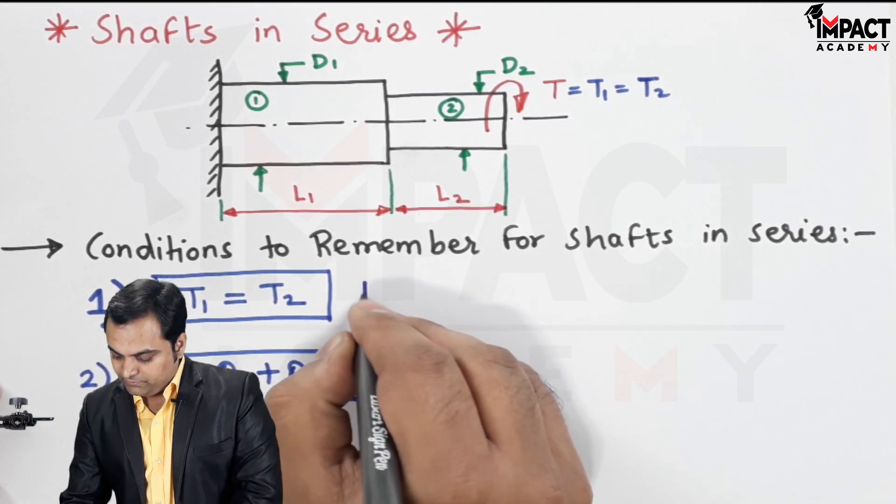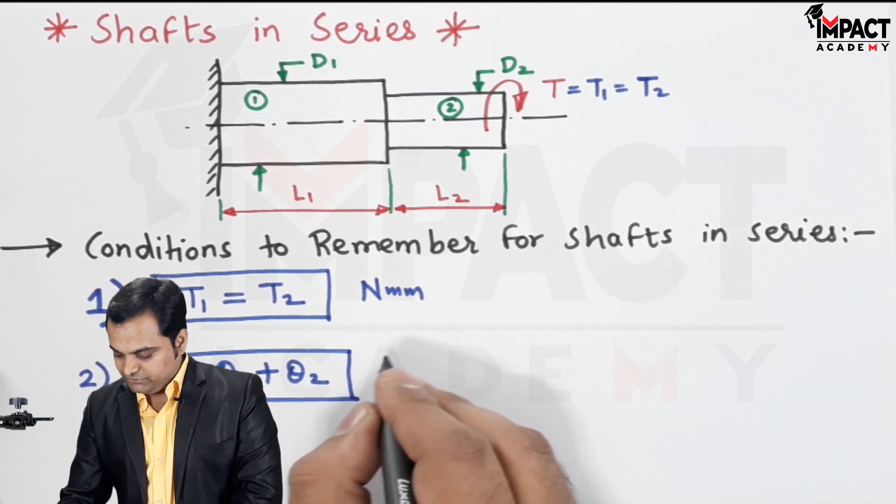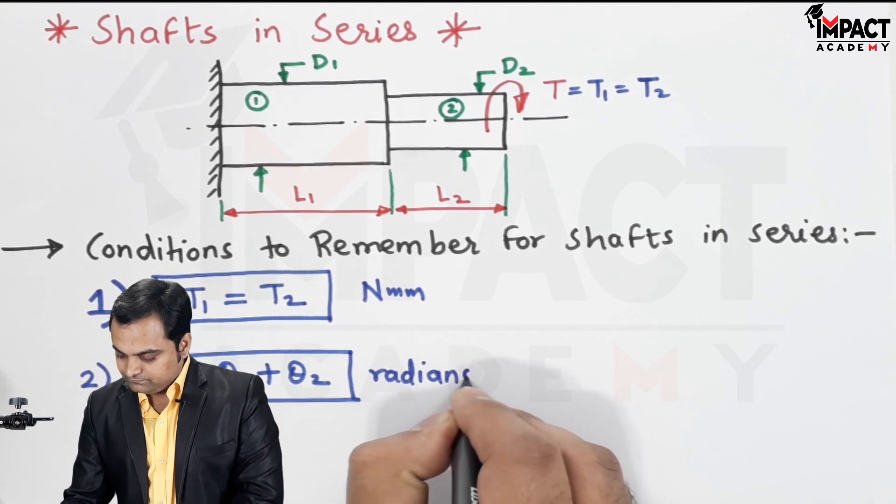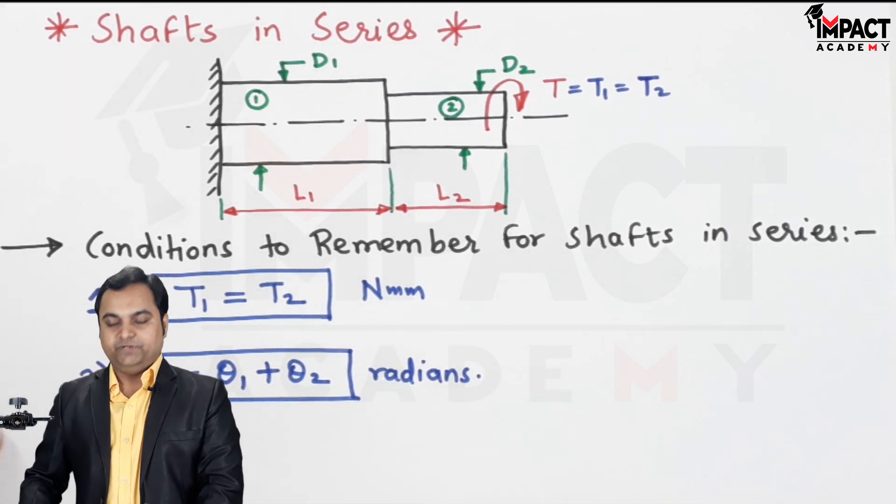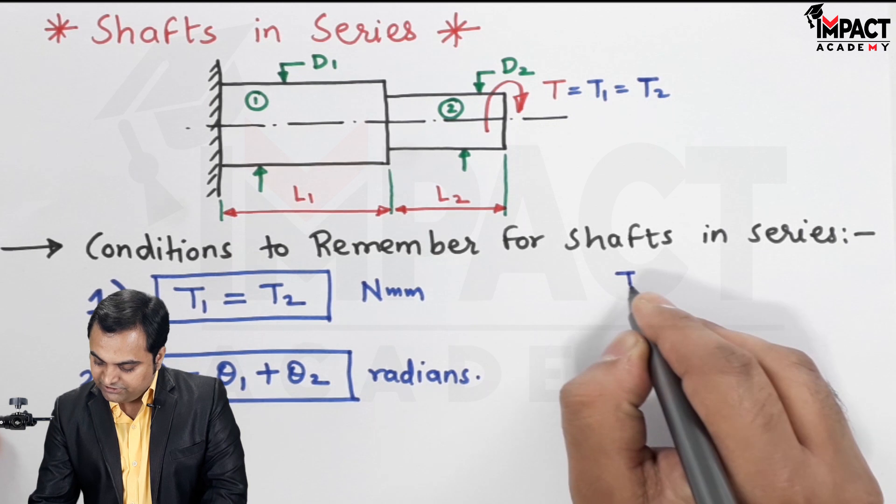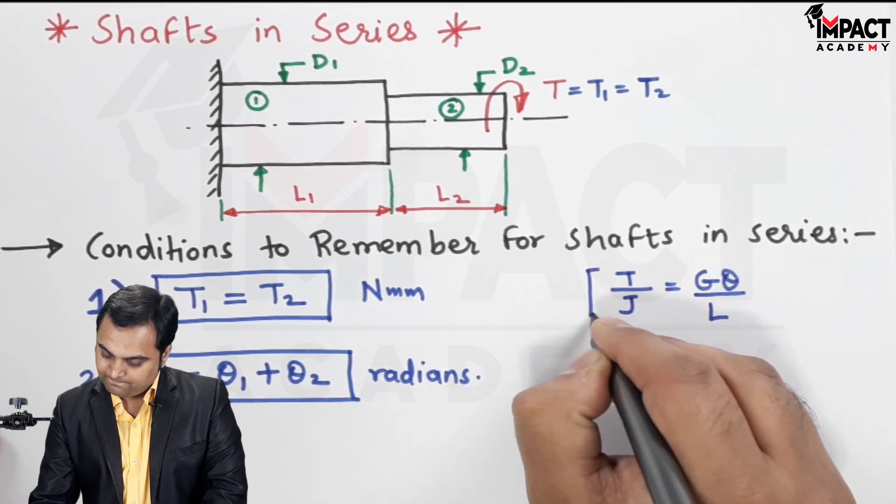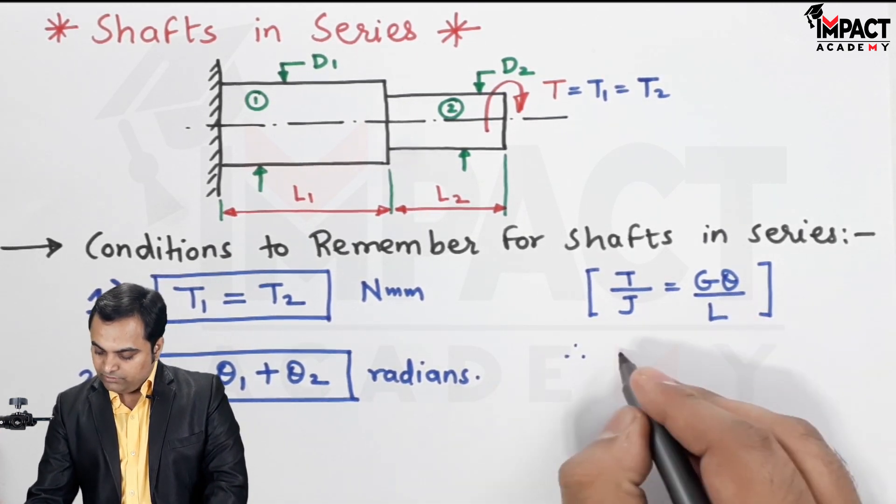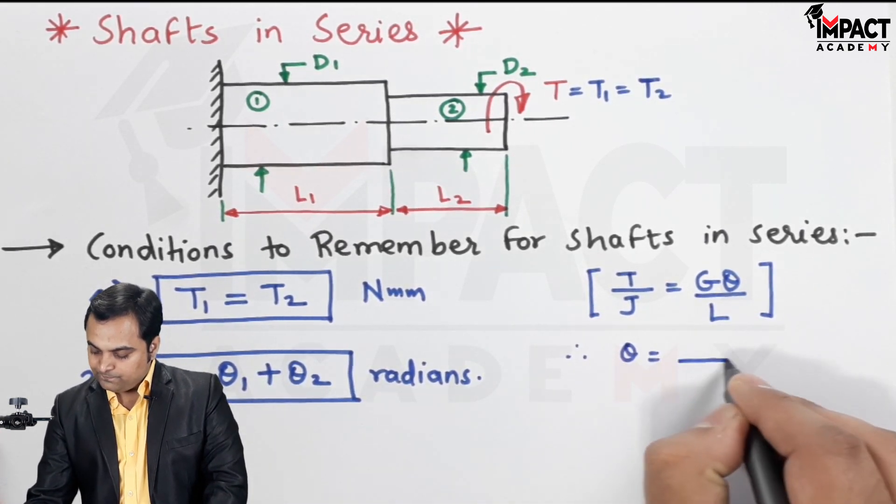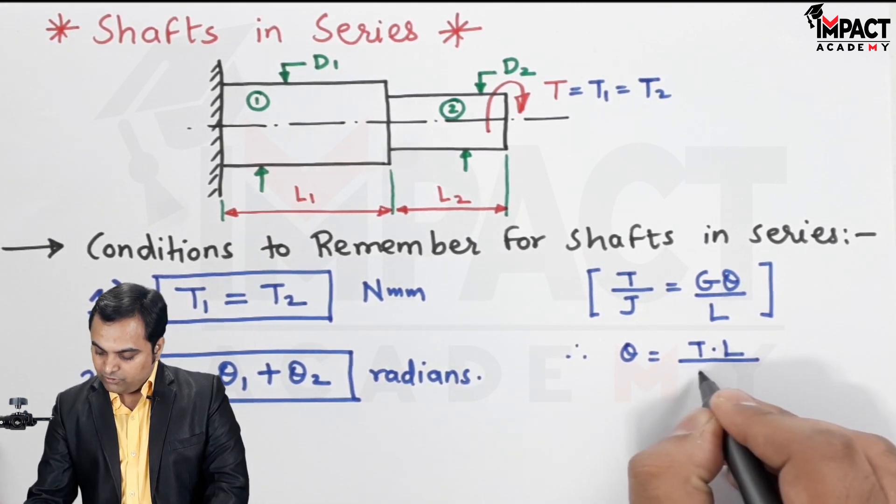The unit of torque is Newton mm, and for angle of twist it is radians. This angle of twist can be obtained from the torsional equation for rigidity criteria, that is T by J is equal to G theta by L. So therefore, theta is equal to T into L upon G J.